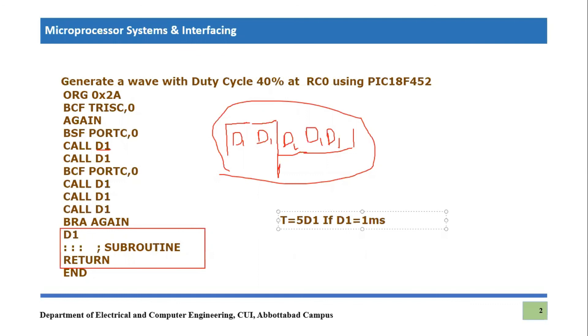And if we know the time period of this wave, then we can easily calculate the frequency. So frequency of this wave would become one over time period, which is one over five milliseconds. So if you calculate it, it would become equal to 200, 200 Hertz. So that's how you can calculate the frequency of this wave.